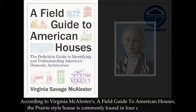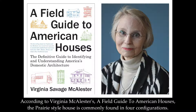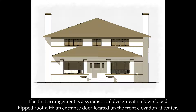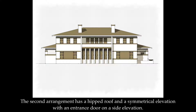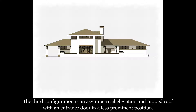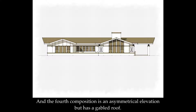According to Virginia McAllister's A Field Guide to American Houses, the prairie style is commonly found in four configurations. The first arrangement is a symmetrical design with a low-sloped hip roof with an entrance door located on the front elevation at center. The second arrangement has a hip roof and symmetrical elevation with an entrance door on a side elevation. The third configuration is an asymmetrical elevation and hip roof with an entrance door in a less prominent position. And the fourth composition is an asymmetrical elevation but has a gabled roof.